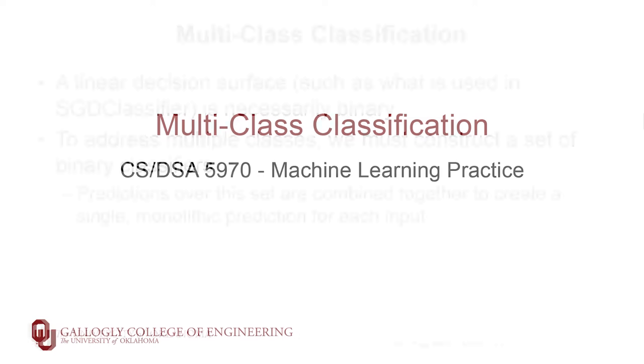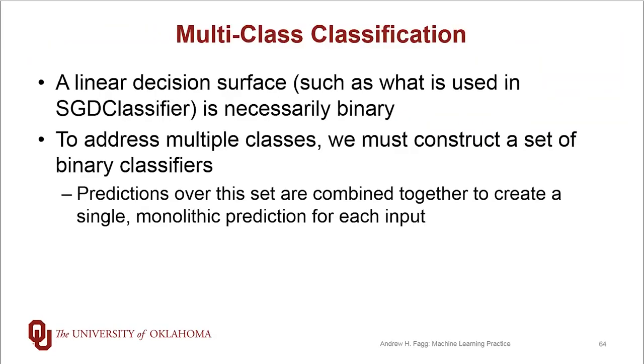And so we'd like to be able to solve this type of a problem but with any sort of classifier that draws a surface across some sort of an n-dimensional space. In our case we're drawing a hyperplane with the SGD classifier. We necessarily have a binary type of an approach. But the question is can we make use of this mechanism in order to build a multi-class classifier?